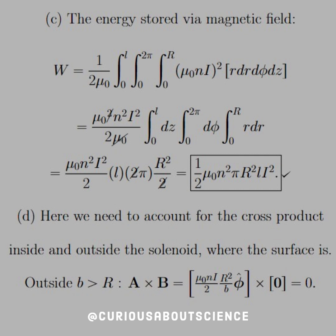B squared is mu naught N I squared, so we see if we just go ahead and plug everything in and substitute or push out and use Fubini's theorem, we see that in the second line we get a cancellation of mu naught, so that's nice. And then our first integral gives us a factor of L, our second gives us a factor of two pi, then of course we have R squared over two, so the twos cancel. And as we have expected by now, we're going to end up with one half mu naught N squared pi R squared L I squared. Alright, so we're very consistent.